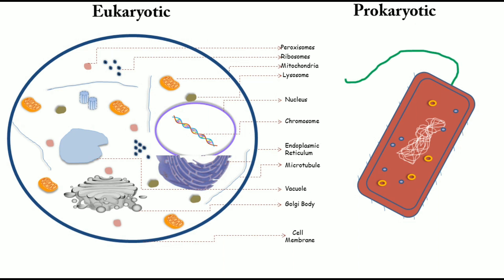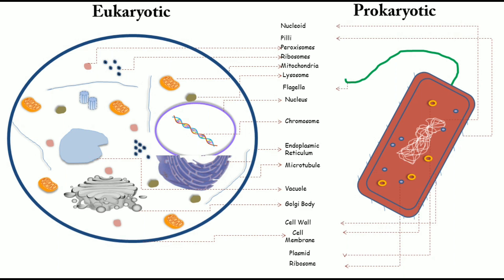Flagella is the apparatus present in bacterial cells that helps them move. They rotate the flagella clockwise or counterclockwise to move forward or sideways. Comparing the two cell types, you can clearly see that in eukaryotes the organelles are membrane-bound and well-separated, with the nucleus, endoplasmic reticulum, and others all present. In prokaryotes, these organelles are absent except for ribosomes, which are suspended in the cytoplasm.